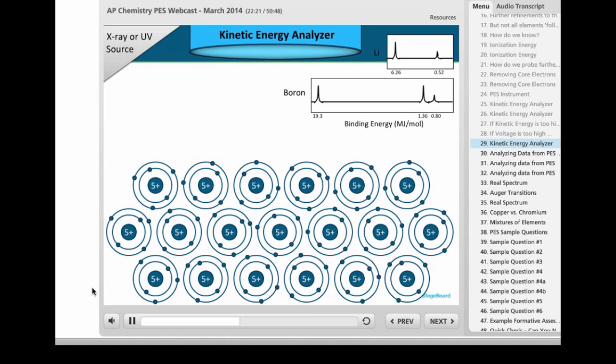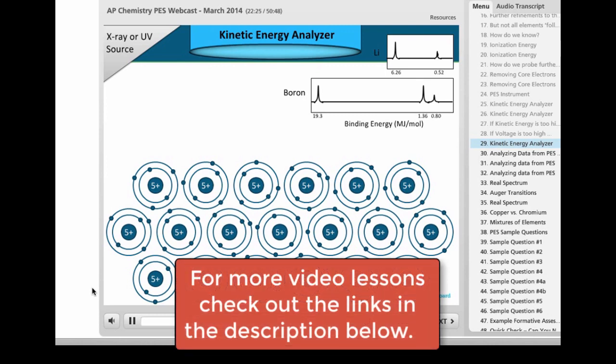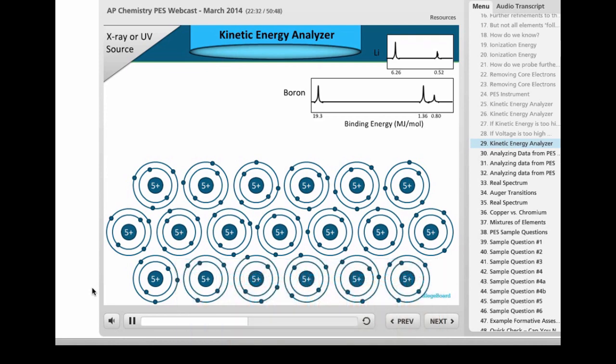So you can use this data to introduce the idea of s, p, and d sublevels and the varying electron energy that is there. PES provides direct evidence that the Bohr model does not fully describe the electron shells, and our subshell model provides a further refinement to his first model presented.